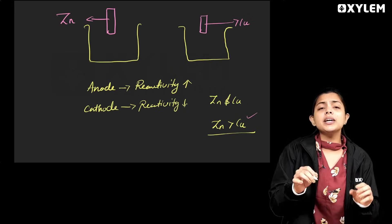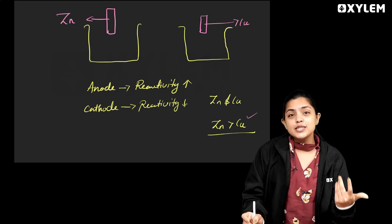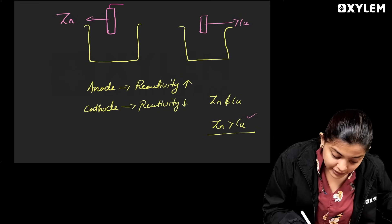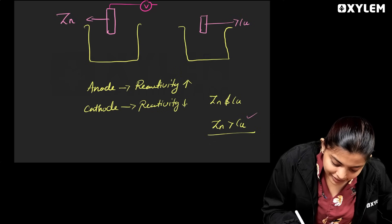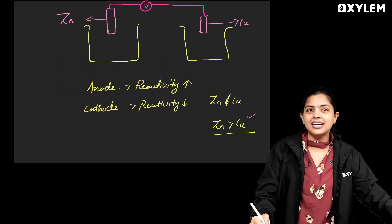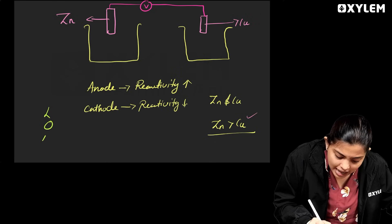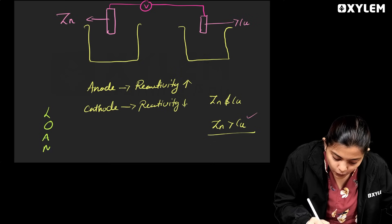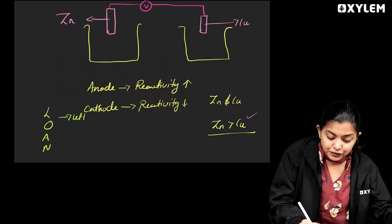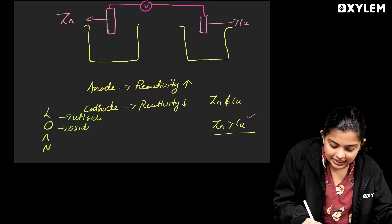These electrodes are connected. This is the electricity produced. This is the voltmeter. The voltmeter is on the left side, and then on the right side.